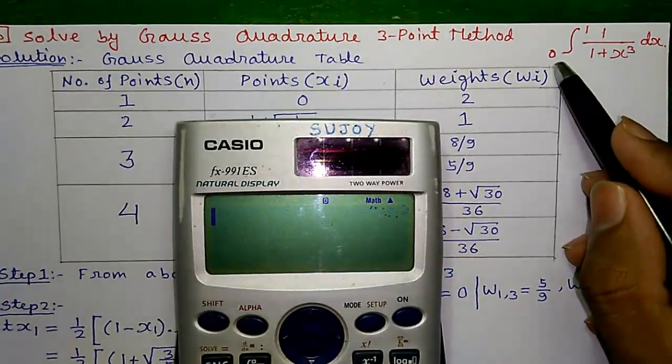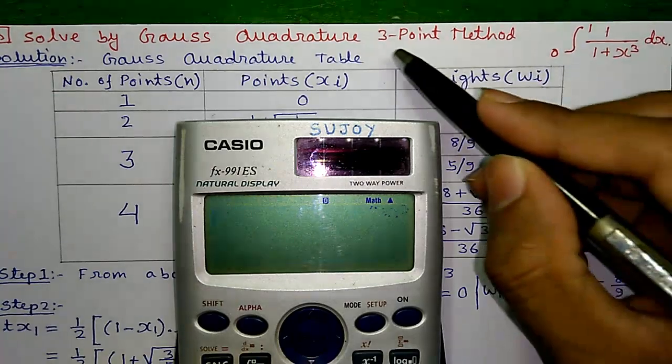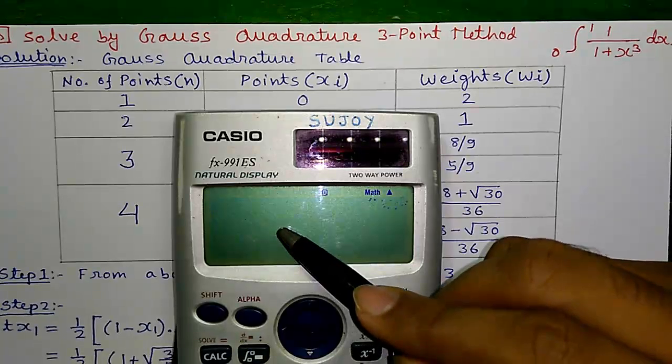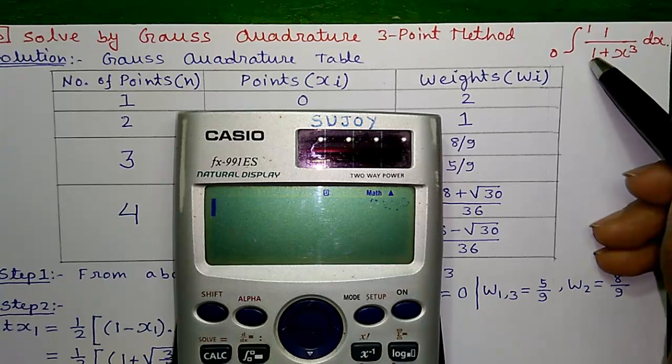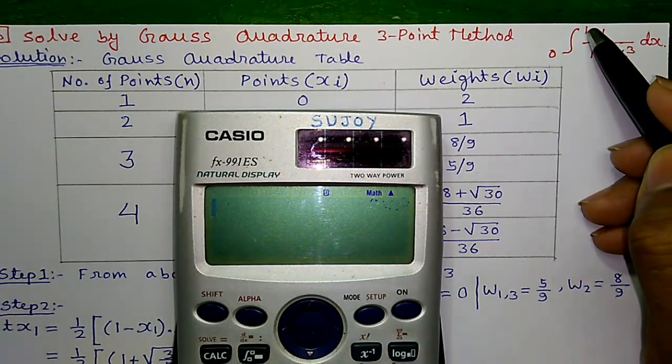Hello friends. I am Sujoy and today I will tell you how to solve a numerical integration problem using Gauss Quadrature 3-point method and how to solve it directly on a scientific calculator. So, here is our question. Find out the integration of 1 divided by 1 plus x cubed dx with the lower limit 0 and upper limit 1.